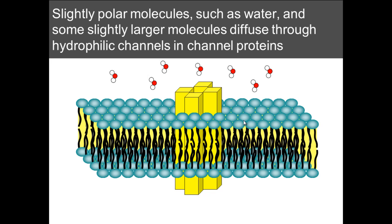Slightly polar molecules — ones with specific charges, such as water — have specific charges on parts of the hydrogen and oxygen atoms. Slightly larger molecules would need a protein channel in order to move through the membrane.